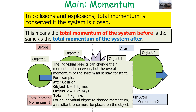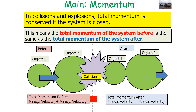For an individual object to change momentum — to have an impulse — a resultant force must be placed on the object. We can split this idea of total momentum before equalling total momentum after and think of it as the product of mass and velocity: mass times velocity before equals mass times velocity afterwards.